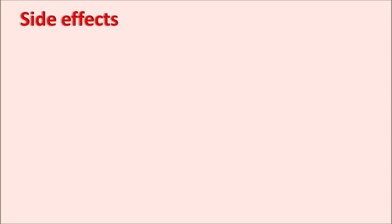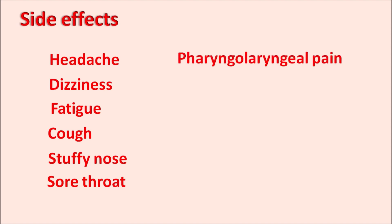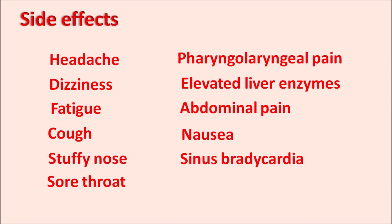The important side effects of itraconazole affecting the nervous system include headache and dizziness. It can produce upper respiratory tract infections resulting in fatigue, cough, stuffy nose, and sore throat. Similarly, pharyngolaryngeal pain and elevated liver enzymes can be observed due to hepatotoxicity. Gastrointestinal side effects like abdominal pain and nausea can also occur. It can affect the heart resulting in sinus bradycardia, and can produce back pain in patients.